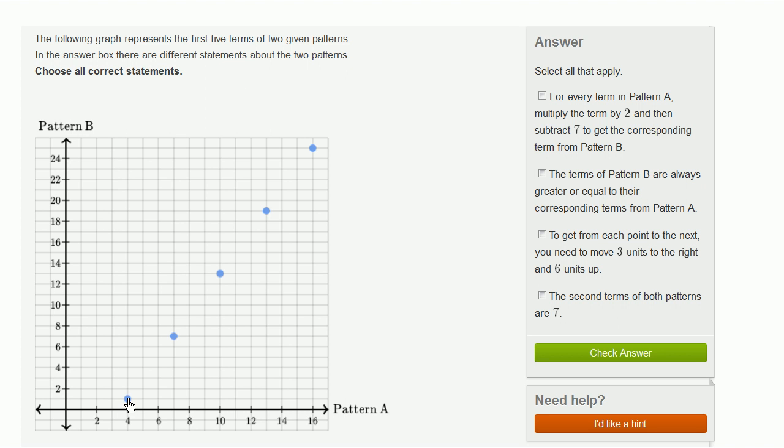So here, for each point, this point right over here represents its horizontal coordinate is the first term of pattern A, which is 4, and its vertical coordinate is the first term in pattern B, which is 1. And then we could do that for the other points as well. So actually, let's figure out what the values are.